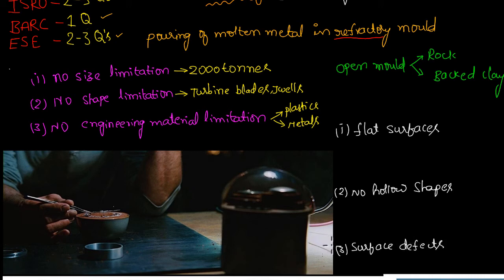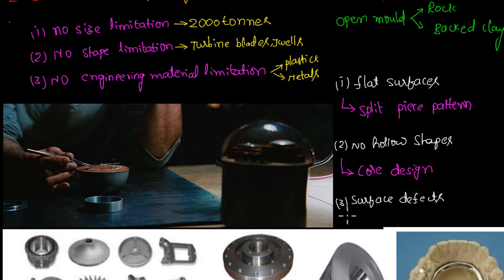To overcome these three limitations, people invented three main inventions. Those are: to work on flat surfaces we invented split piece pattern. To overcome the no hollow shapes, core design came into picture. To overcome the third limitation, gating elements.